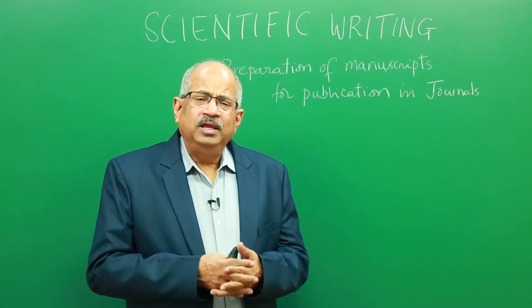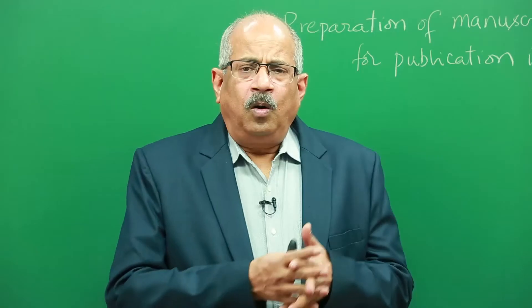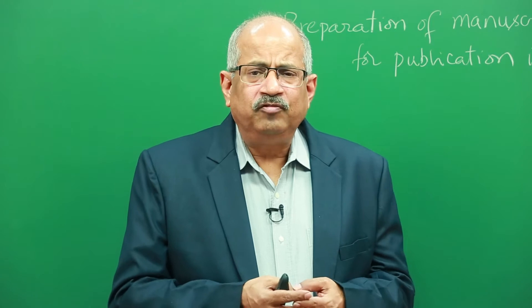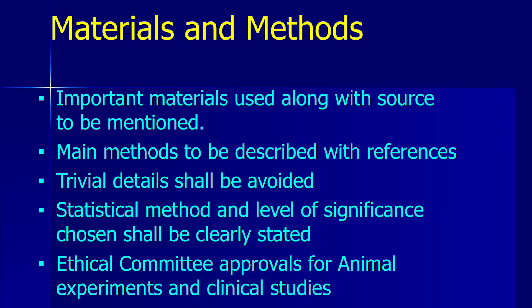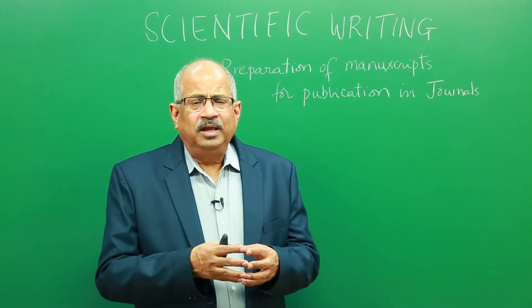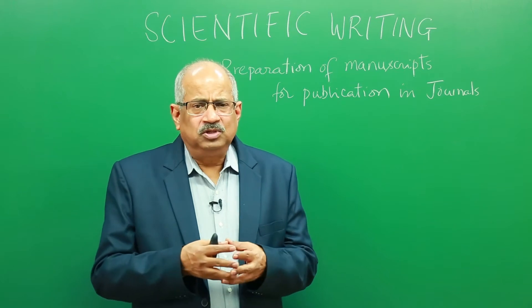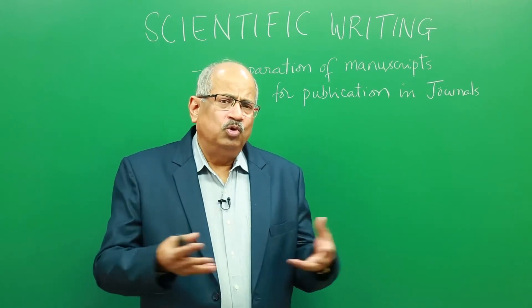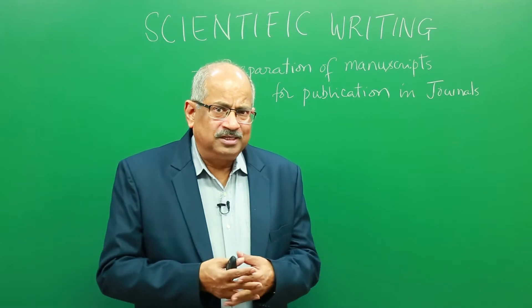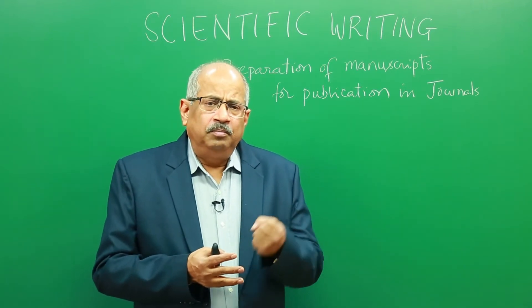The next section would be materials and methods. All important materials and methods used in a particular investigation — the data of which was analyzed and presented in the results and discussion — should be mentioned. There are some critical materials that are used, not the normal general materials like organic solvents or inorganic salts used in most investigations. You need not list those, but only the critical materials.